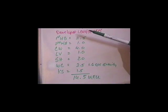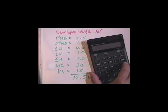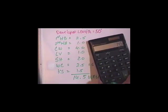If you add this up, let me check my addition. Get your calculator out and we'll go 2.5 plus 1.0 plus 4.0 plus 1.0 plus 2.0 plus 2.5 plus 1.5 equals 14.5.